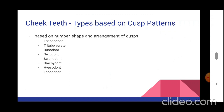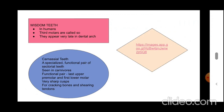The next aspects — cusp patterns, the dental formula, and modifications in mammalian teeth — will be discussed in the fourth part of the lecture on dentition in mammals. Thank you.